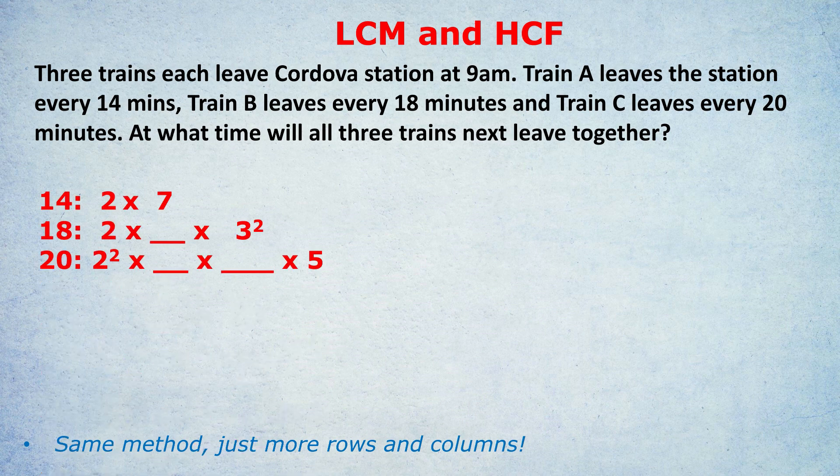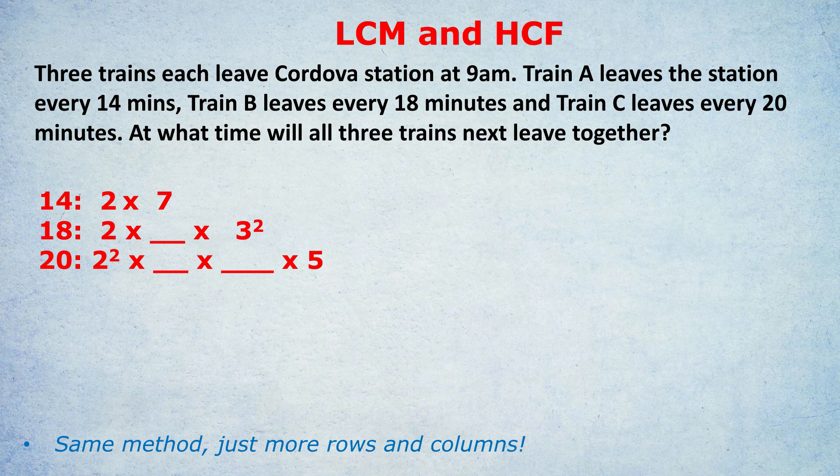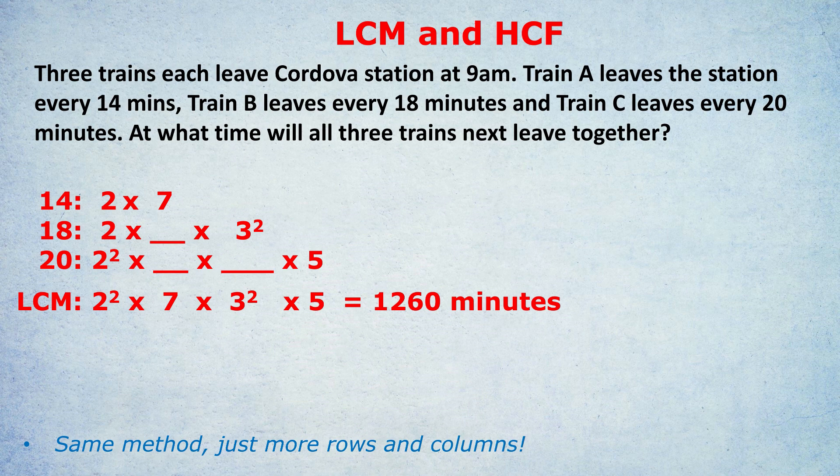So hopefully you did something like this. Notice I had a 2s column, a 7s column, a 3s column, and a 5s column. The order doesn't really matter as long as each one gets a unique column. And for LCM, do we take the biggest or smallest in each column? We take the biggest. The biggest in the first column is 2 squared. In the second one, it's 7. Third one, it's 3 squared. And fourth one, it's 5. Multiplying that together, it's quite hard to do in your head, but you can do it. Or we can use a calculator for the GRE and you get 1260.